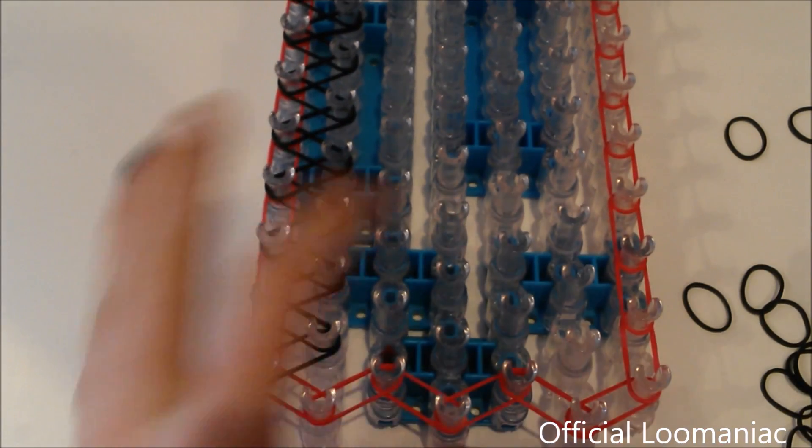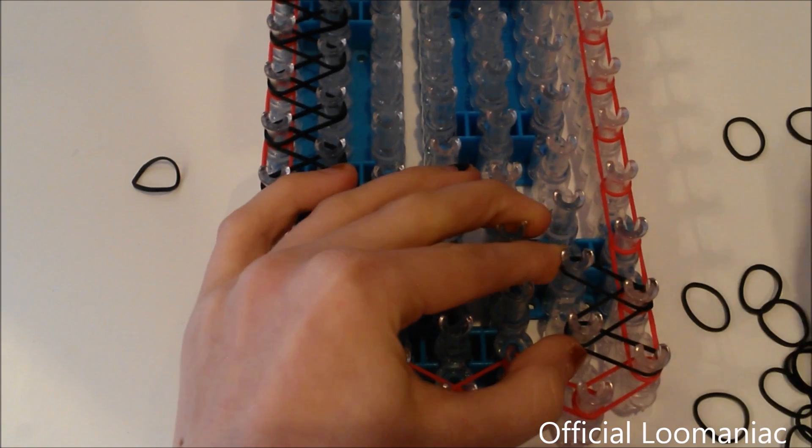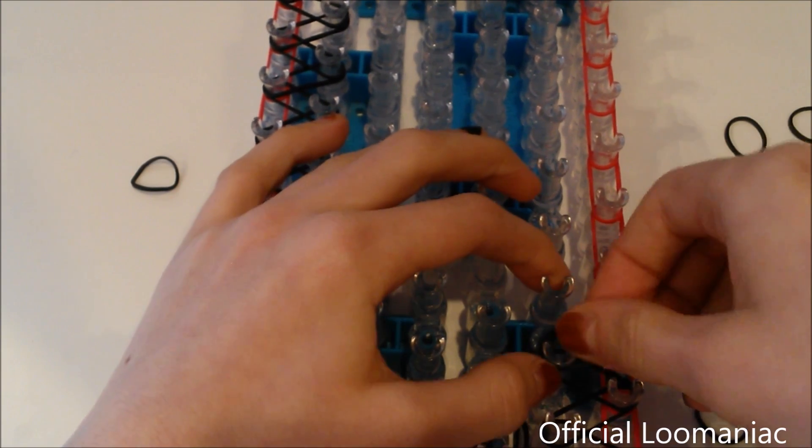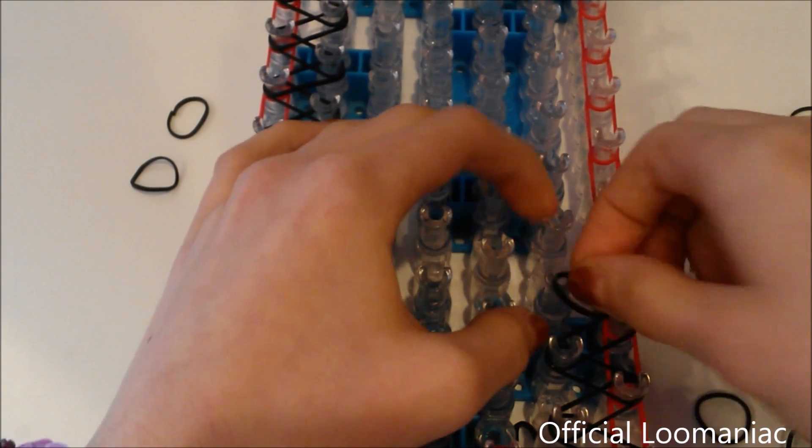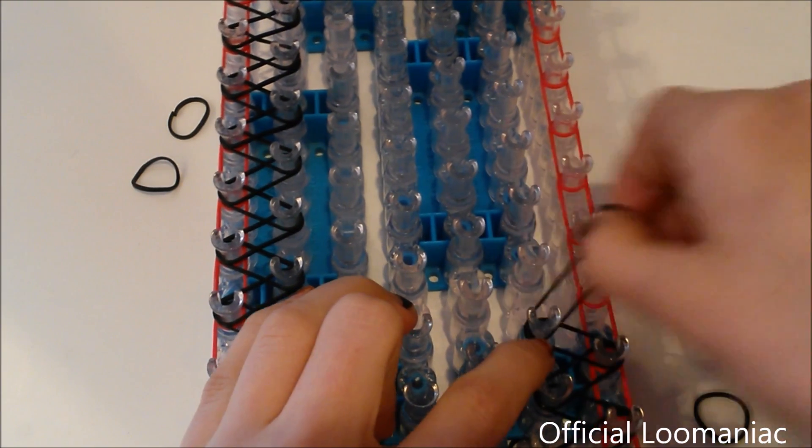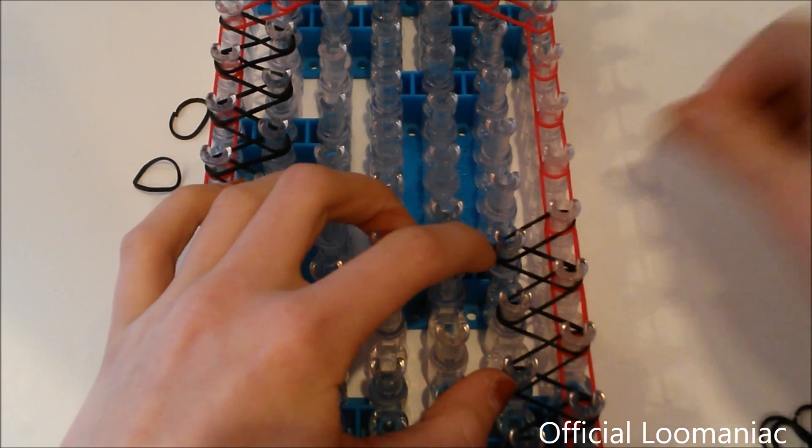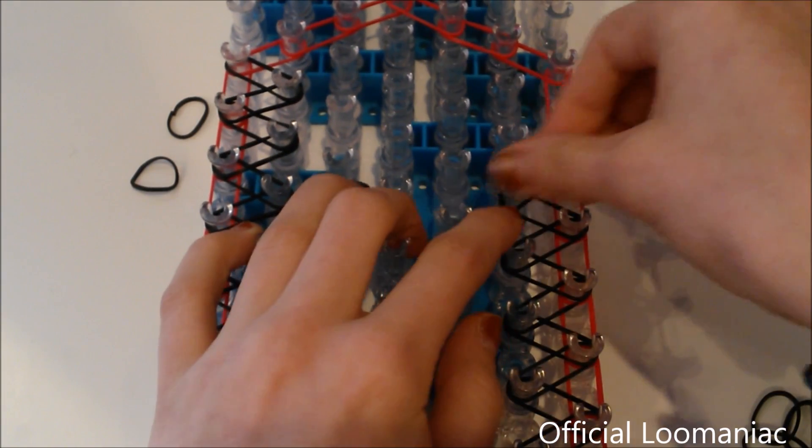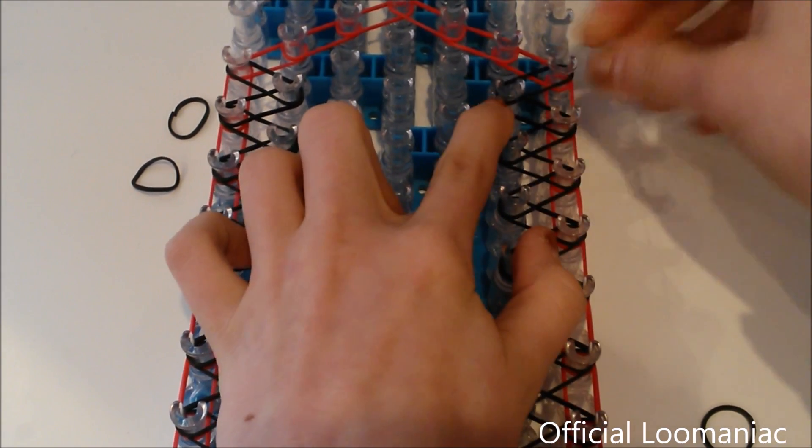And now we'll do the same thing on the right side, starting on this pin here. Just zigzag up the loom. For some reason every now and then I have trouble with the black bands and the mango bands. They just kind of snap randomly but no other colors because Rainbow Loom is super durable bands. But just occasionally with the black and mango.